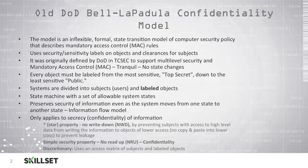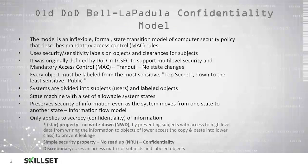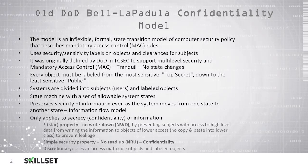With this model, all of our objects must be labeled from the most sensitive, or top-secret, down to the least sensitive, or public. We divide our systems into users and labeled objects, and it's important that all of the objects have a label for the system to work properly. This is considered a state machine — we have a set of allowable system states, and we preserve the security of our information even as the system moves from one state to another using the information flow model. It applies to the confidentiality or secrecy of information; we're not concerned with this model with the integrity of information. This is a confidentiality model.